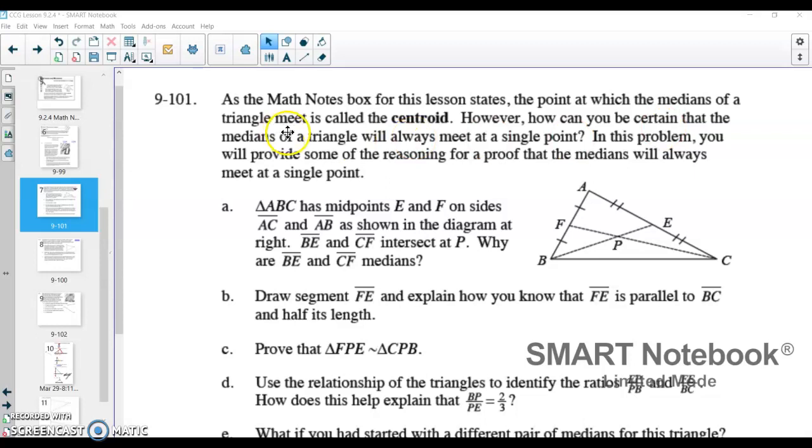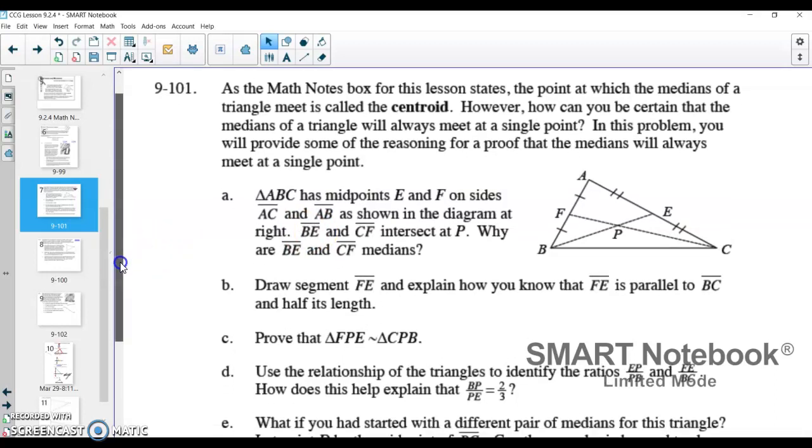However, how can we be certain that the medians of a triangle will always meet at a single point? And it's just kind of a question you think about, a classic exploration. Yeah, we know medians and we know that if they do intersect at a single point, it's called a centroid. But how do we know that they always are? And this problem is a little bit long, but it's going to take us through how we know they're going to intersect at that one point.